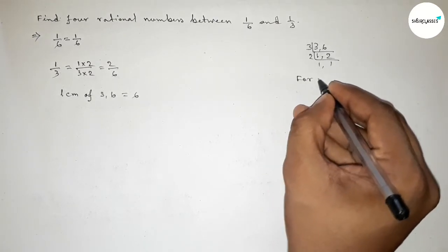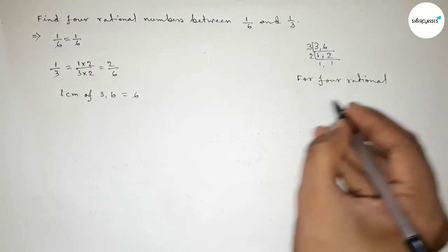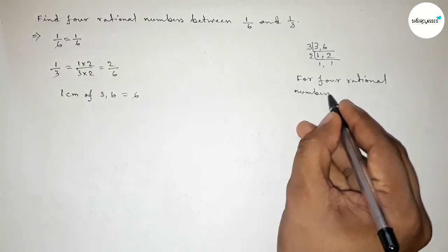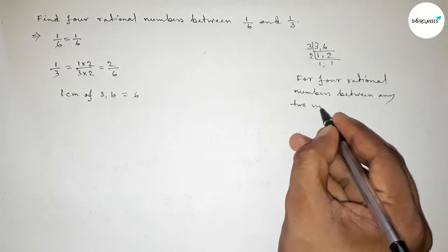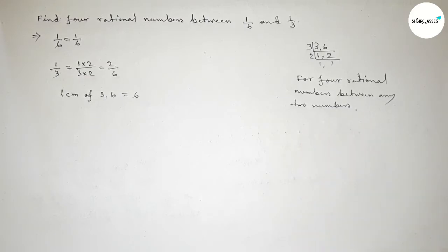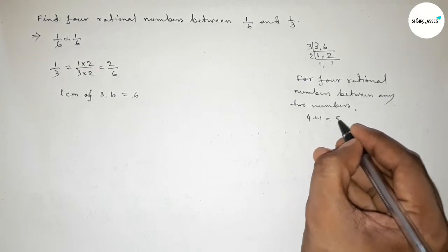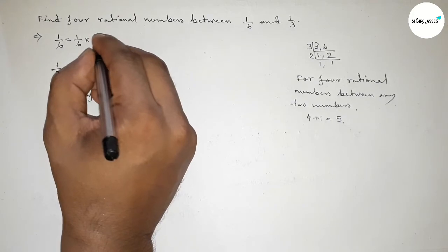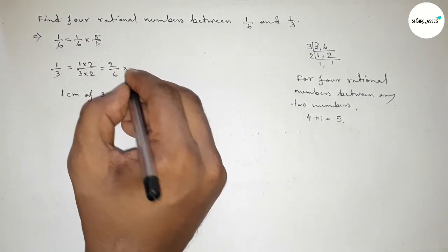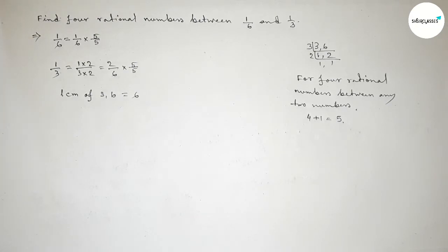Now discussing here an important method: for finding four rational numbers between any two numbers, we have to follow this method. We should multiply both numbers by 4 plus 1. So 4 plus 1 equals 5. We should multiply both numbers by 5.